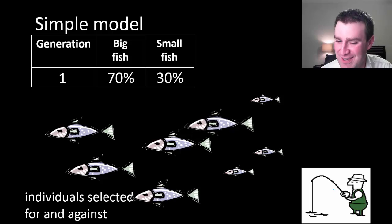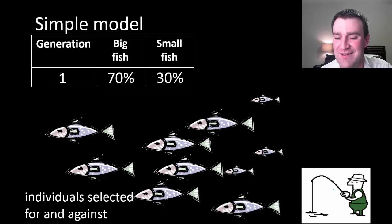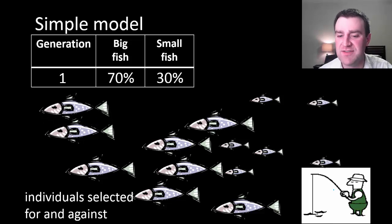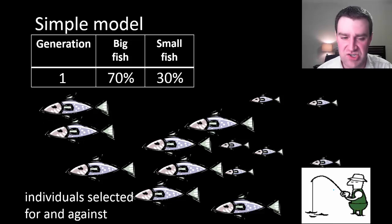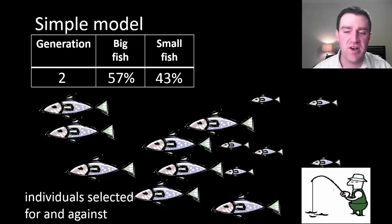I know that fish don't actually reproduce this way, but hopefully you get the idea. Let's just say every survivor happens to reproduce, and they reproduce two offspring. Then everybody in here is generation two. If you're actually counting all the fish, you could recalculate your percentages. And maybe now the percentages look like this. A little bit of a shift because on average, the smaller fish survived and reproduced more than the bigger fish.